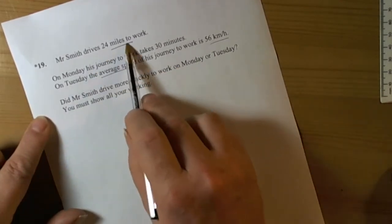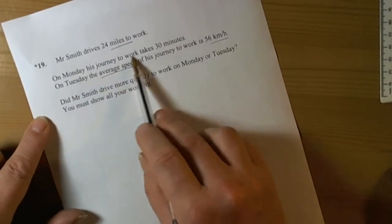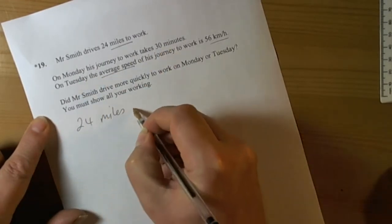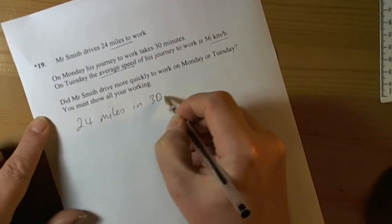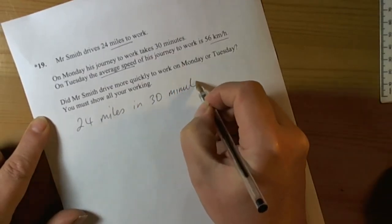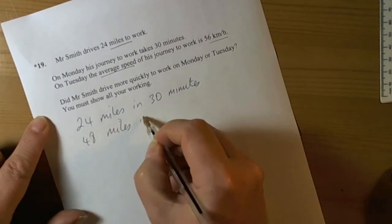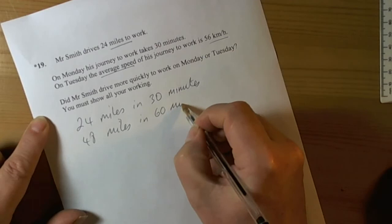So if he's traveling 24 miles to work and the journey takes him 30 minutes, so 24 miles in 30 minutes, then he's going to do 48 miles in one hour, so 60 minutes in an hour.